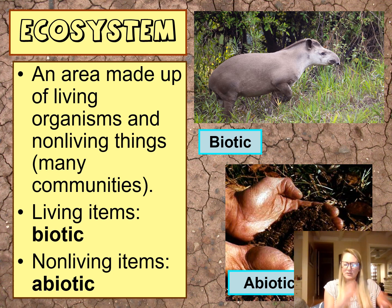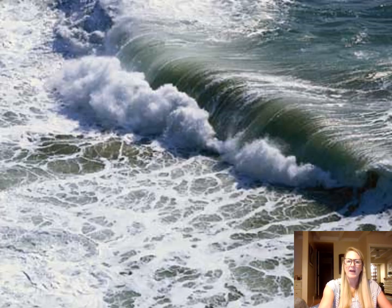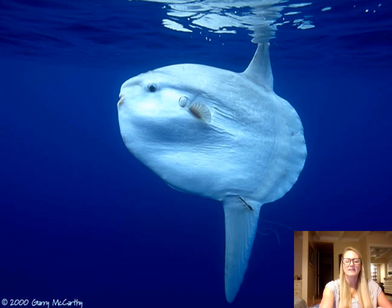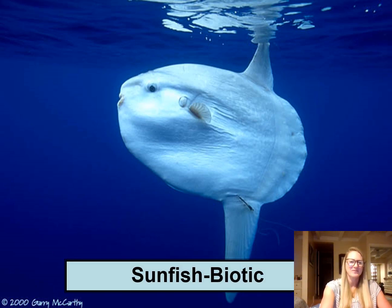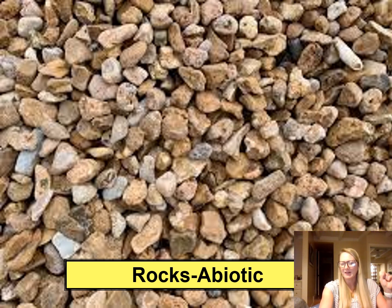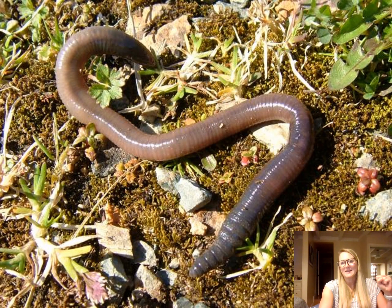Let's go through some examples. The ocean water itself would be an abiotic factor. The mola mola, or sunfish, is a living fish, so it's classified as a biotic factor. Rocks found in our community are definitely abiotic — they are not living. And worms are living, so they would be classified as biotic.